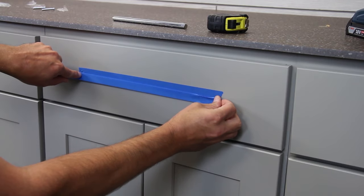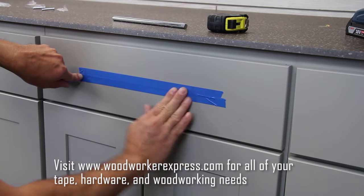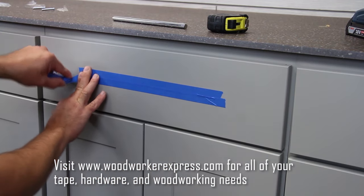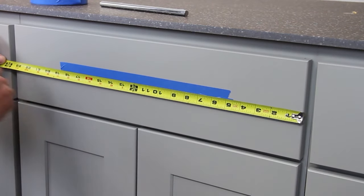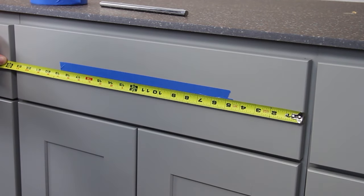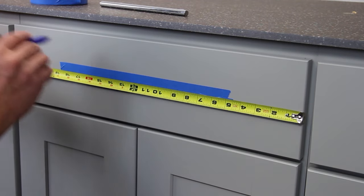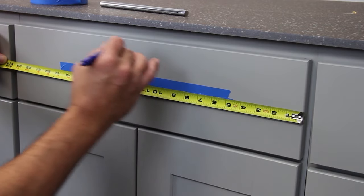The center part of the drawer front. I would suggest using a little bit of wider tape, makes it a little easier but really anything will work. Now we'll go left to right and we're going to see our drawer front is exactly 23 and a half inches. We're going to find the half of that which is 11 and three quarter.